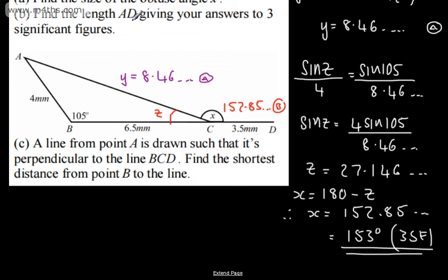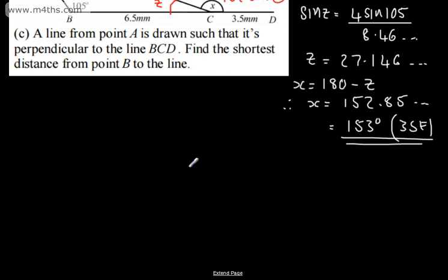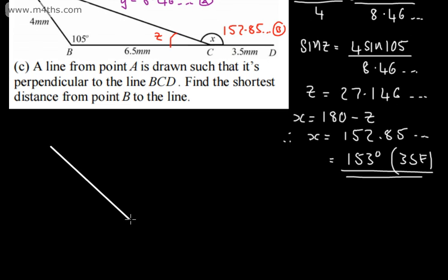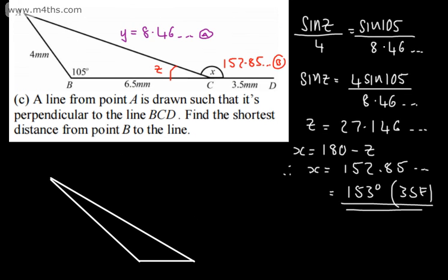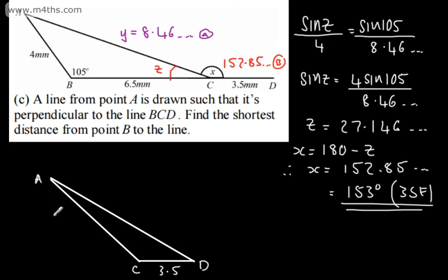In part B we need to find the length AD, giving our answer to three significant figures. A is here and D is here. Let's go ahead and draw the information we've got and form a triangle. We'll have A just here, C here, and D here. We've got 3.5 here, we've found AC is going to be 8.46, which is still in my calculator, and we've got this angle just here which is going to be 152.85..., which is stored in the calculator.